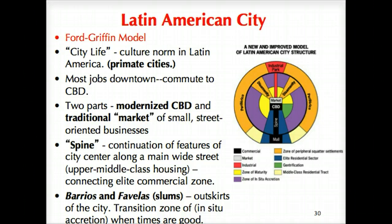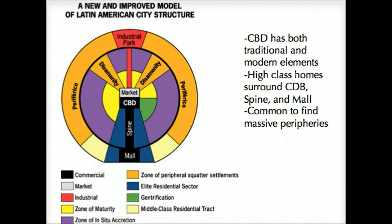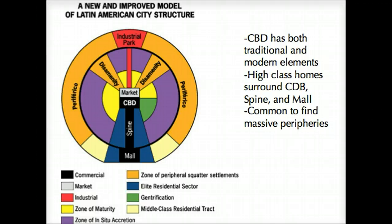The transition zone is a hybrid of some of the things happening there. One of the main identifying characteristics is the spine that extends from the central business district out to the outskirts, where you typically find a mall or commercial area that provides access especially for the most impoverished. Along those lines you see the elite residential sector — the most stable, most economically active zone — where the upper class generally resides.